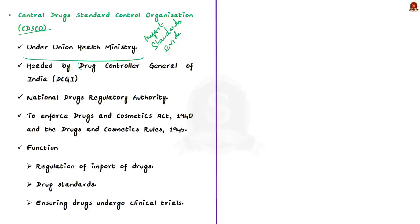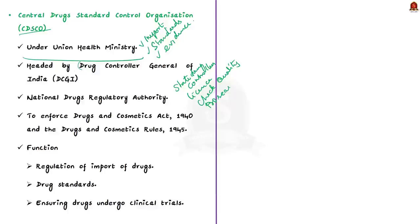The Central Drugs Standard Control Organization is headed by the Drug Controller General of India. At the state level, there are state drug controllers, one in each state and Union Territory. The functions of state drug controllers include providing licenses to drug manufacturers, picking up sample drugs from the market and checking their quality, and prosecuting drug manufacturers when sample drugs are found to be substandard.